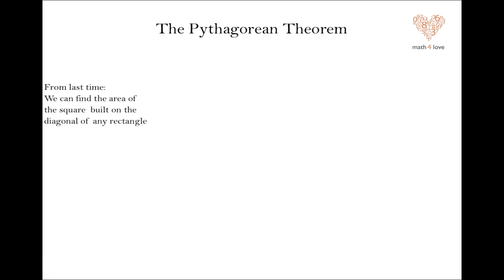Last time, we saw that it's possible to find the area of any square built on the diagonal of a rectangle. So in other words, we take some rectangle, let's say this one, and let's just recall the construction.